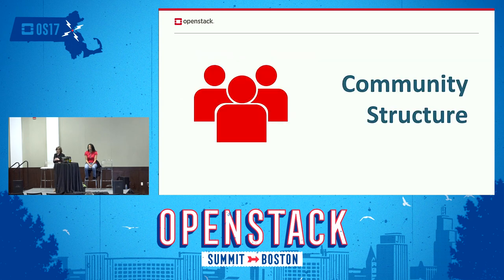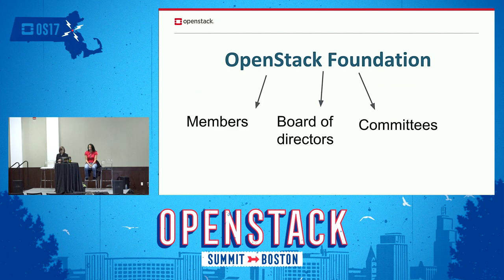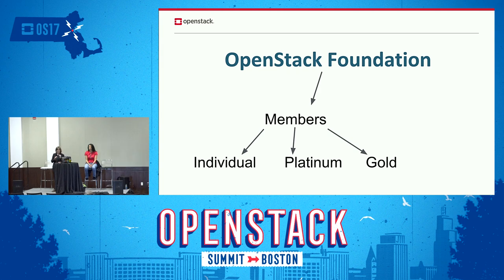Let's have a quick look at the community structure. At the top we have the OpenStack Foundation — they advocate for the global development and distribution of the OpenStack cloud computing operating system. Within that, they have corporate governance by its members, a board of directors, and committees. OpenStack members break down into individual, platinum, and gold members. The platinum and gold members are companies that have significant resources contributing to OpenStack.